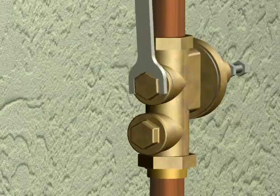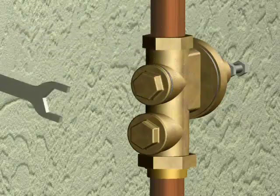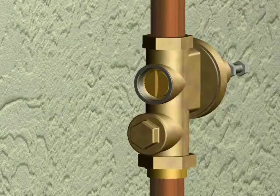Loosen the main cap with a wrench by turning it counterclockwise. Remove the main cap and the washer.